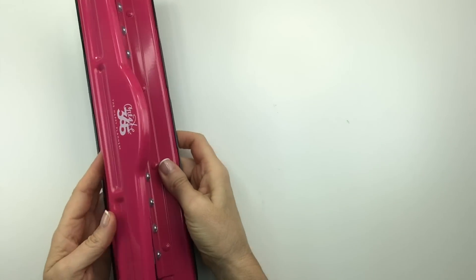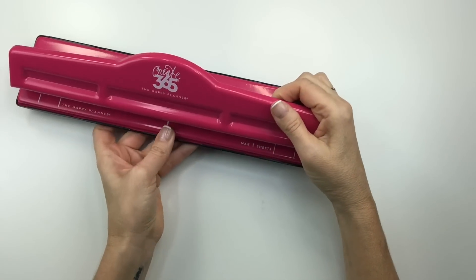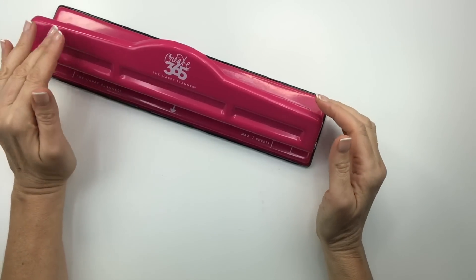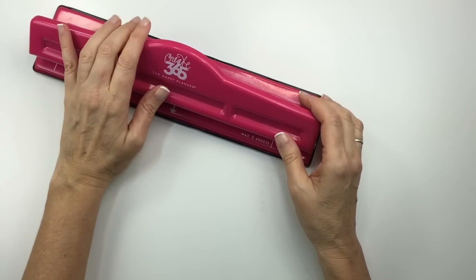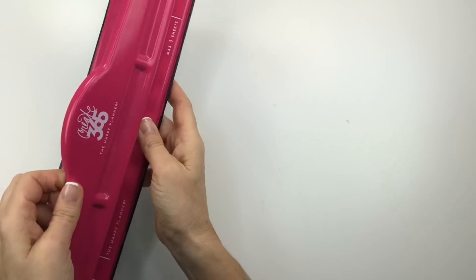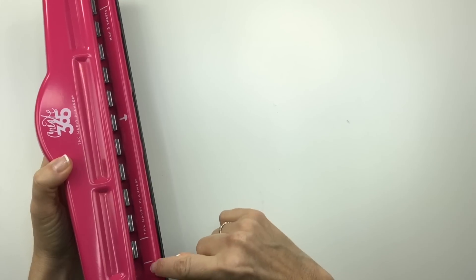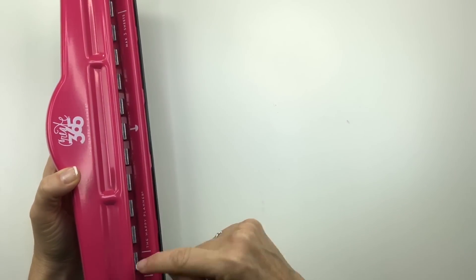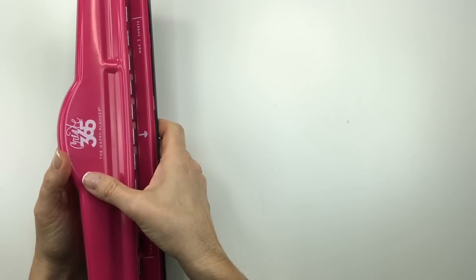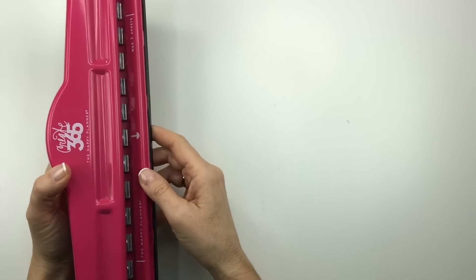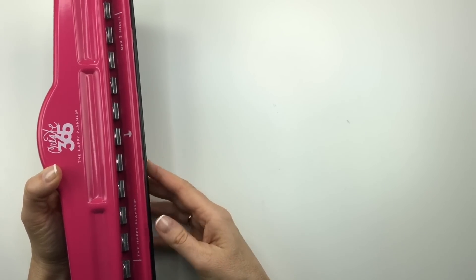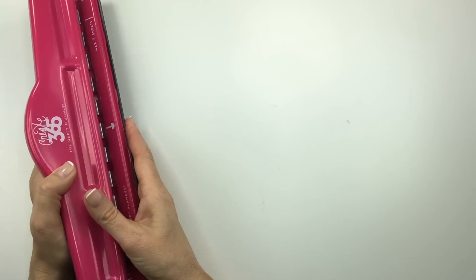Another thing I would recommend for sure is the happy planner punch. This one is a big happy planner punch. I would recommend getting this one if you are using a big and a classic because you can see, if you have a big, you can line your paper up here and here. If you have a classic, you line it up here and here. So if you do purchase the big punch, you don't need to purchase a classic punch as well, which is very useful.